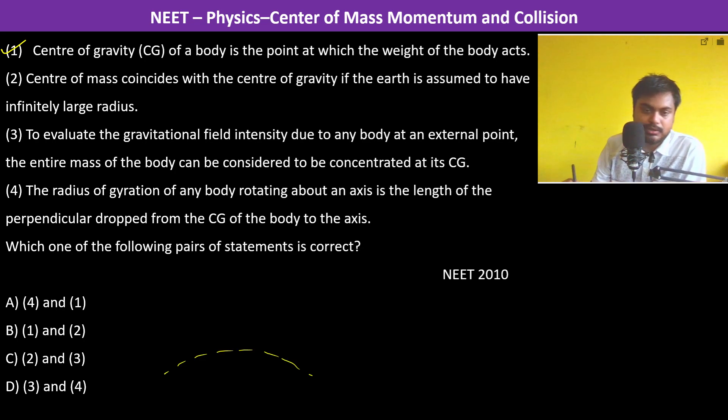If the earth is having an infinitely large radius, there will be some acceleration due to gravity. Any body at the top of earth has some different g here and some different g here. Because it's different, this doesn't qualify as the right answer.